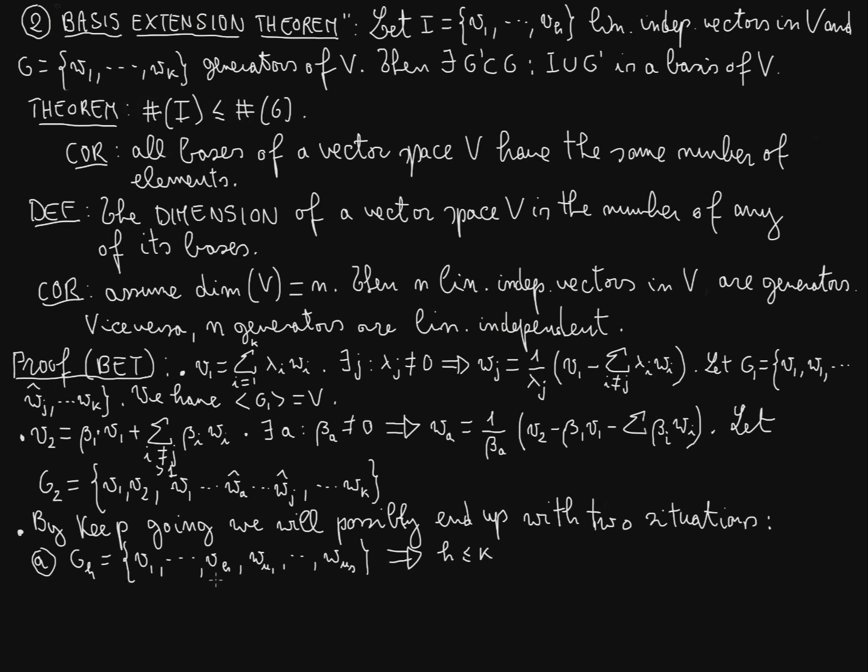We are not there yet because we have to get a basis out of this set in a very specific way. Remember that the statement is that we can add to the v_i's certain number of w vectors in order to complete it to a basis. Now, here we don't know yet that we have a basis. We just know that g_h is a set of generators for V.